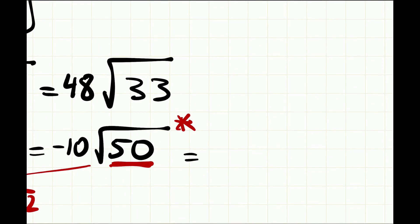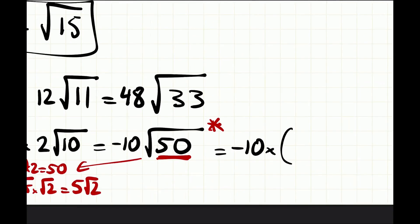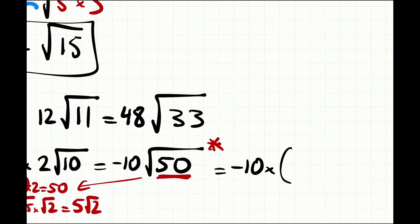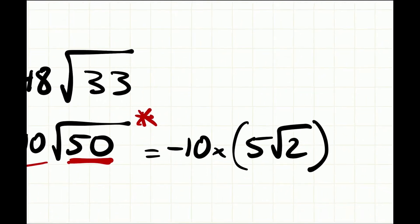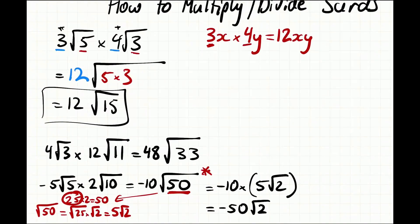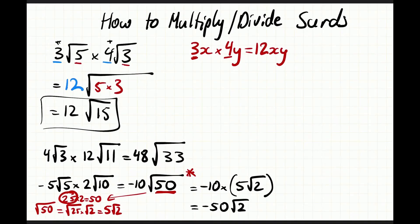Rather than having -10 times √50, we're going to have -10 times (5√2). We then continue with the multiplication — we multiply -10 by 5 — so we have -50√2. That's multiplication. Now let's look at division.